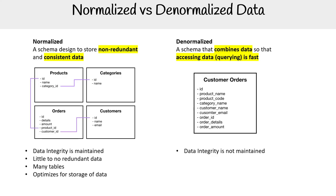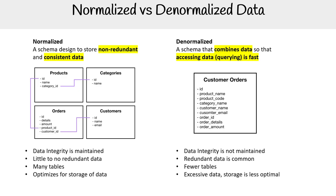On the right hand side, we have denormalized data where data integrity is not necessarily maintained, or there's not good controls in place — you have to do extra work to make sure it is in good shape. Redundant data is common, there are fewer tables, and excessive data storage is less optimal.